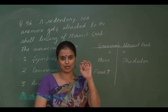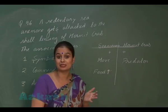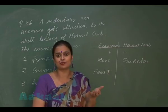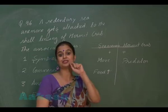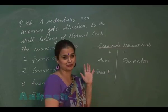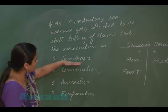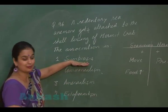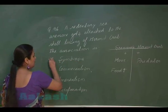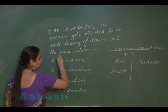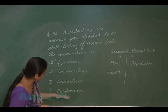When a positive-positive relationship is compulsory you call it symbiosis or mutualism. If it is not compulsory, you call it proto-cooperation or a facultative symbiotic relationship. So between the sea anemone and hermit crab there is a facultative symbiotic relationship.